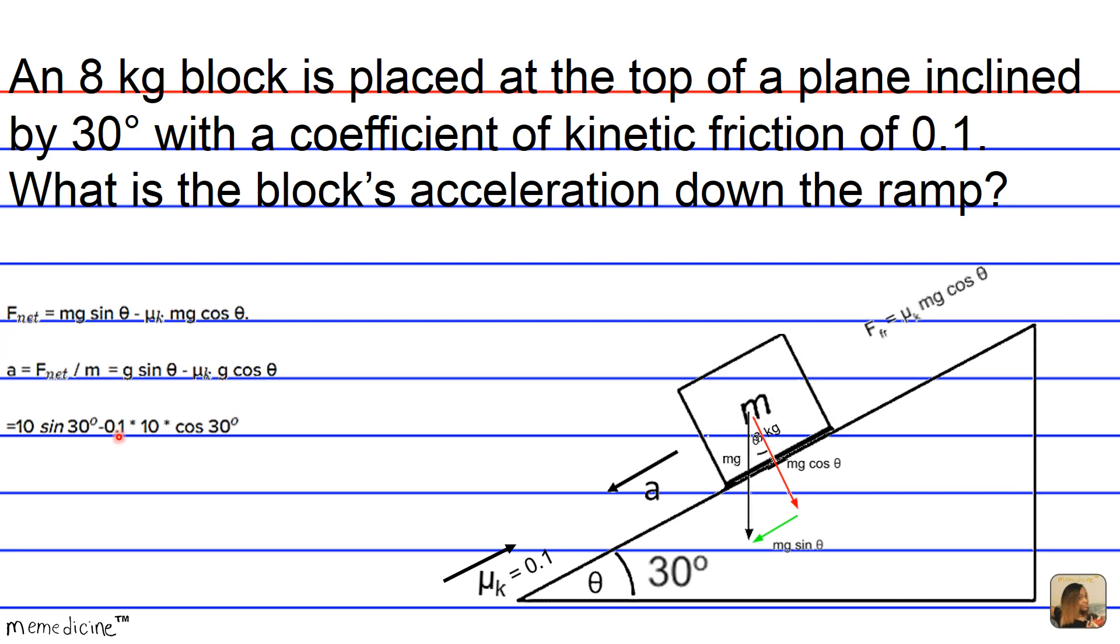So we see here that if we multiply 10 times 0.1, that's just going to be 1, so that's cool. These kind of cancel each other off. So we have 10 the sine of 30 minus the cosine of 30.